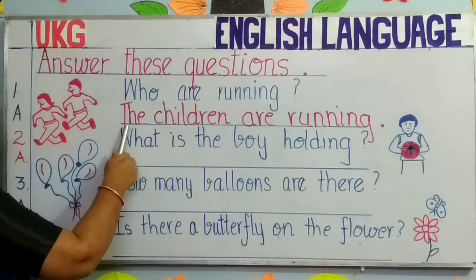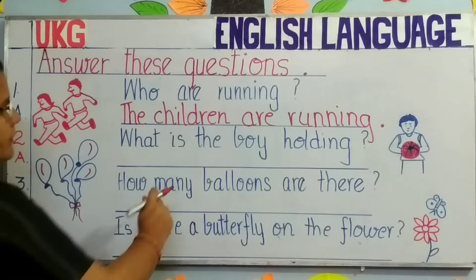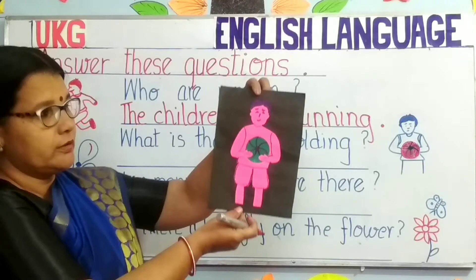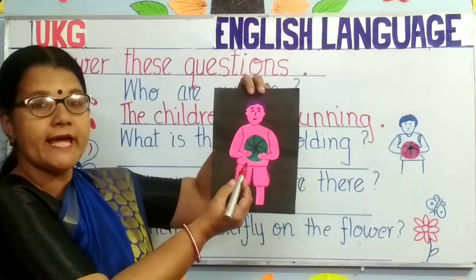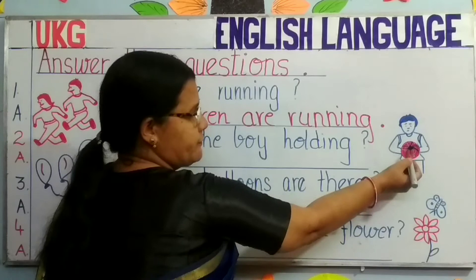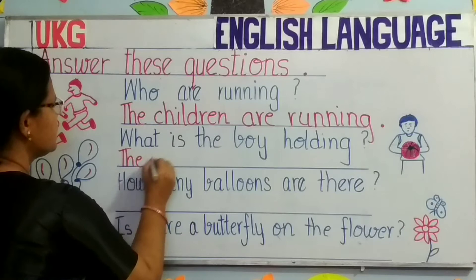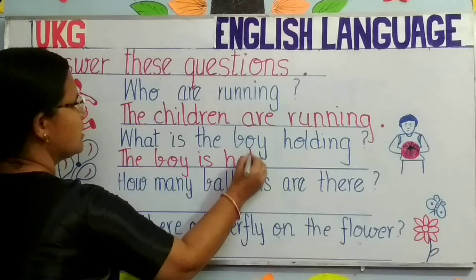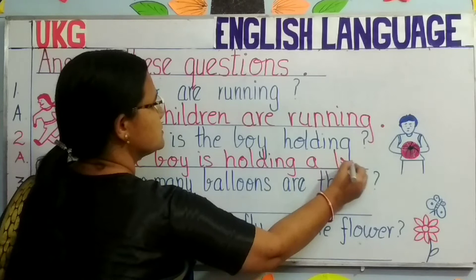Number 2. The picture is on the other side. What can you see, children? You can see a boy. The boy has something in his hand. What does he have? A ball. And the question is: What is the boy holding? You will see this boy and you will see a ball in his hand. So you will write: The boy is holding a ball. Full stop.